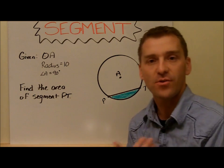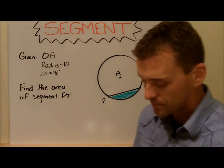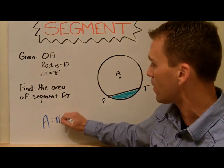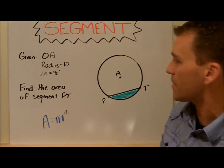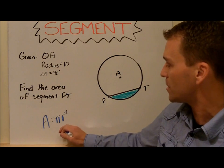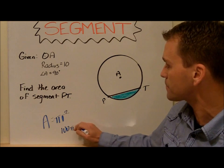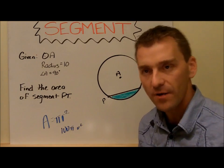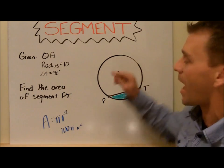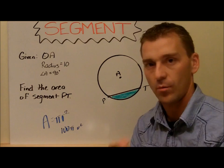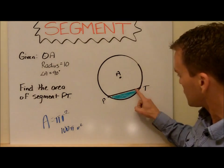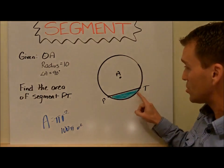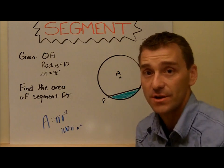Now remember, if I asked you to find the overall area of the circle, all we'd do is pi r squared. With the radius in there, you'd get 100π units squared — that's the total number of little square units you'd fit in this circle. However, I'm not looking for all that. What it's asking for is just the amount of little square units you can fit in this one piece right there.